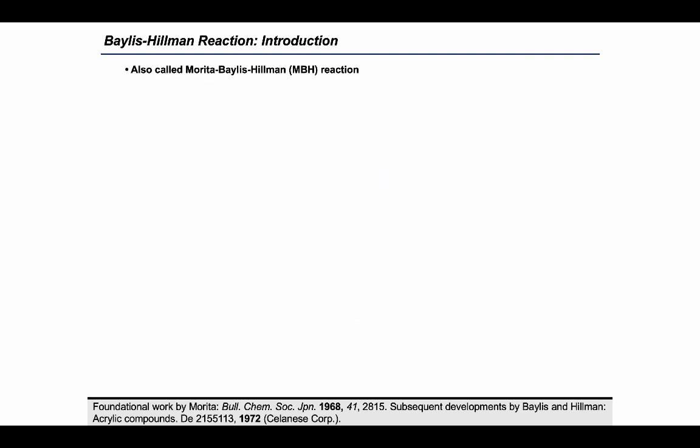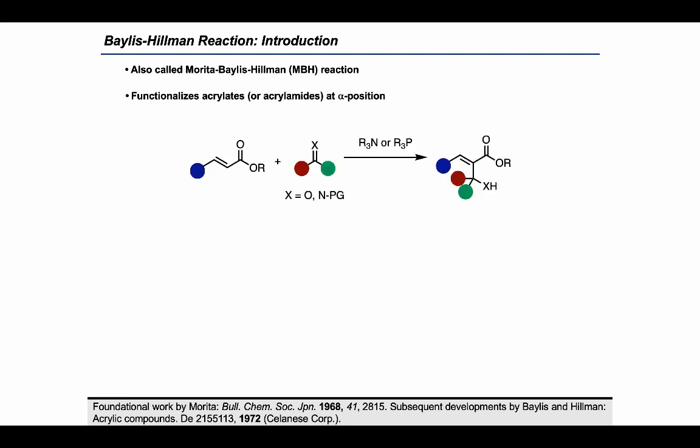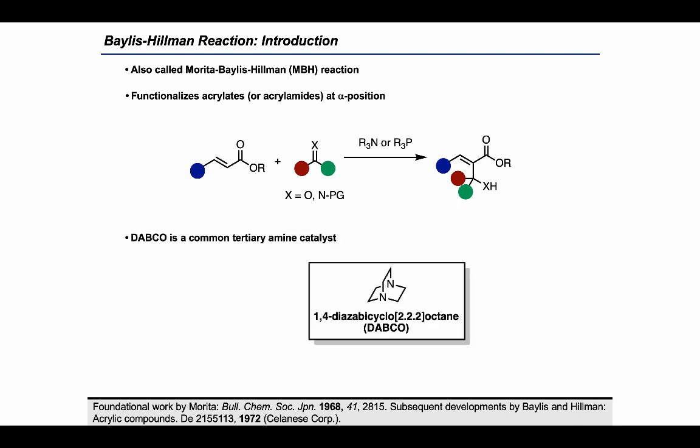Also called the Morita-Baylis-Hillman reaction or the MBH reaction, this reaction functionalizes enoates at the alpha position using carbonyl or amine electrophiles as reaction partners. We frequently see DABCO being employed as an organocatalyst for this reaction.